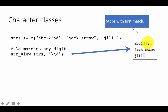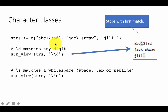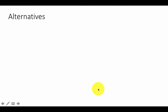Backslash-d matches any digit. Backslash-s matches any whitespace — that is, a space, a tab, or a newline. In our example strings, only one string has a space, so that's the only one that should match the \s pattern, and that's exactly what we see. None of the strings have a tab or a newline, so only the one with a space matches.